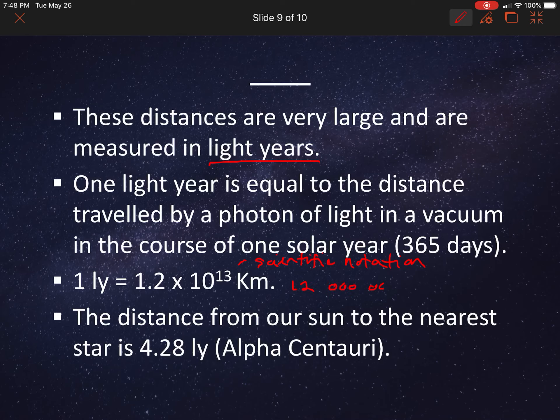And this way of writing it is called scientific notation. So scientific notation. And if we were to write it out in long form, I would have the number 12, and then I would have 12 zeros behind it. So 1, 2, 3, 4, 5, 6, 7, 8, 9, 10, 11, 12. So that is a massive number, right? So that's how many kilometers a light year is, which is how we measure our intergalactic distances. So the distance from our sun to the nearest star is 4.28 light years away. So that's quite far. And that star is known as Alpha Centauri. You can write that in there.